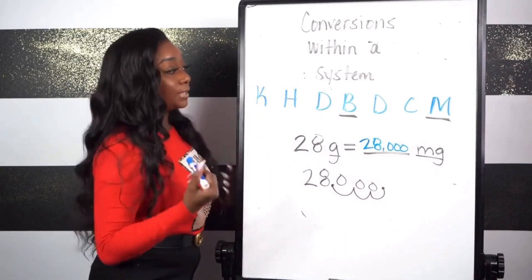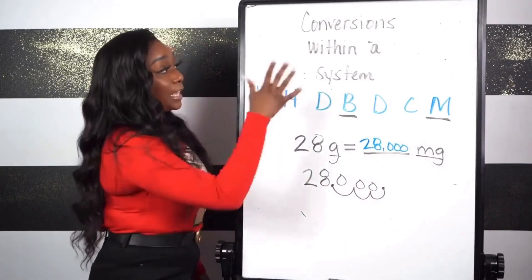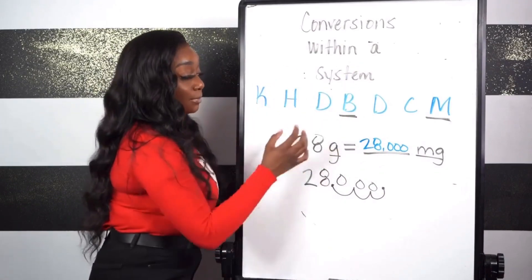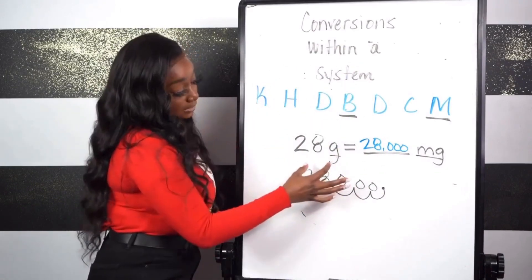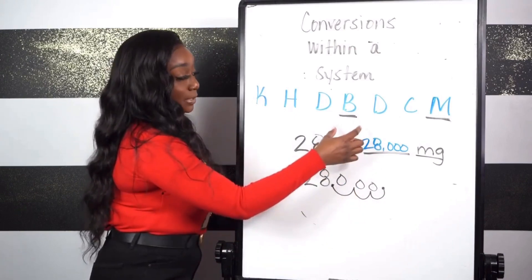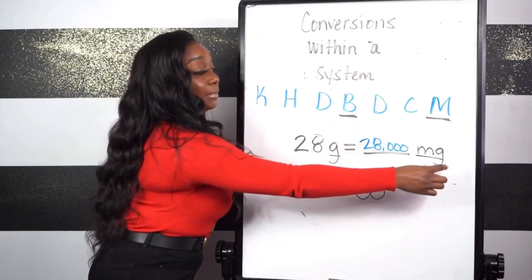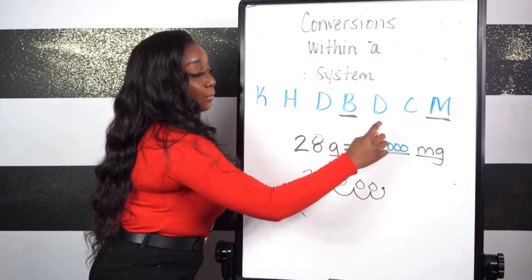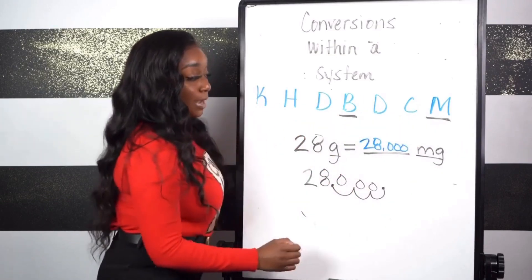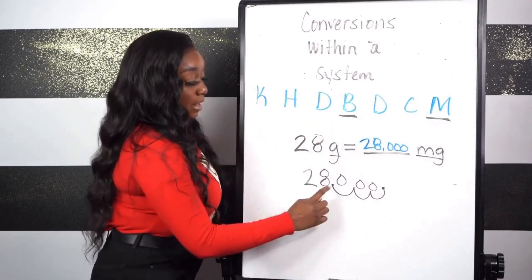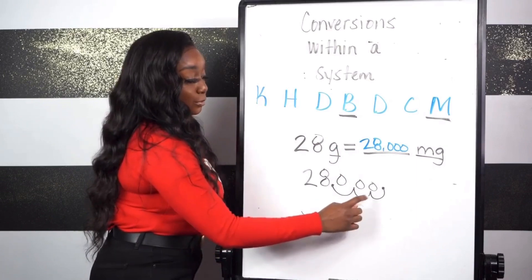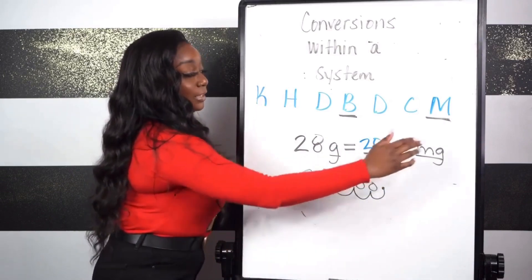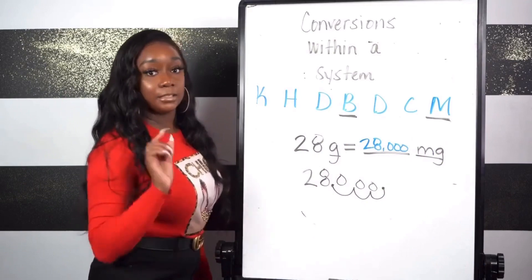To recap: anytime we're completing conversions within a system, you always mark your starting point. In this instance we had grams, which is one of our base units, and we wanted to figure out how many milligrams that would be. So we counted one, two, three spaces to the right, which means the decimal had to be moved one, two, three spaces to the right — and that's how we got 28 grams is equivalent to 28,000 milligrams.